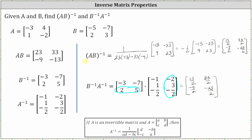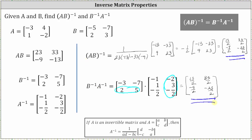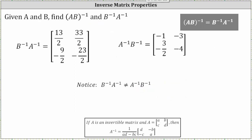Now if we compare the inverse of AB to B inverse times A inverse, notice how the two matrices are equal. And this happens to be one of the properties of inverse matrices. I also want to point out that the order of the multiplication is important. Remember, matrix multiplication is not commutative. A inverse times B inverse does not give the same result, and we can see here that B inverse times A inverse is not equal to A inverse times B inverse.